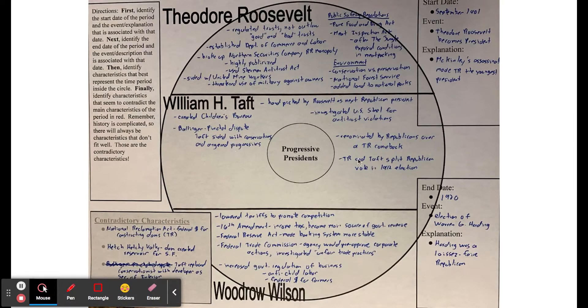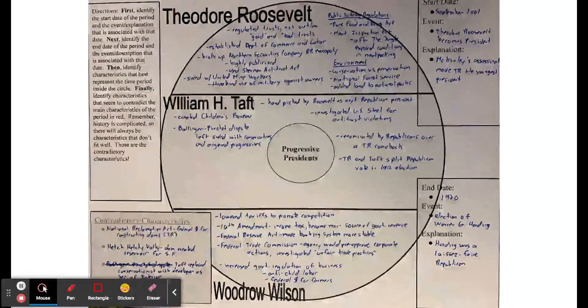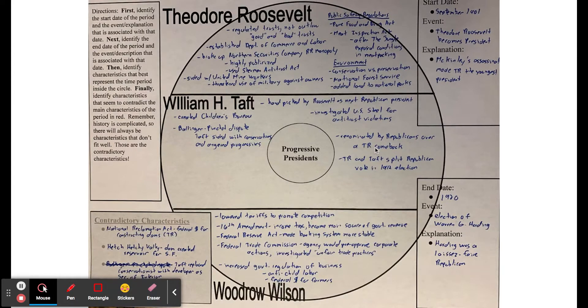So in 1912, when Taft was running for re-election, Teddy Roosevelt said, you know what, Taft didn't really follow my policies. I'm going to try and get the Republican nomination. So it was actually Roosevelt versus Taft. Taft was renominated by Republicans over Teddy Roosevelt. Teddy Roosevelt ended up splitting from the Republican Party and creating his own party called the Bull Moose Party in the 1912 election. This is one of the reasons why Wilson wins, because the Republican vote gets split between Republicans and the Bull Moose Progressive party.